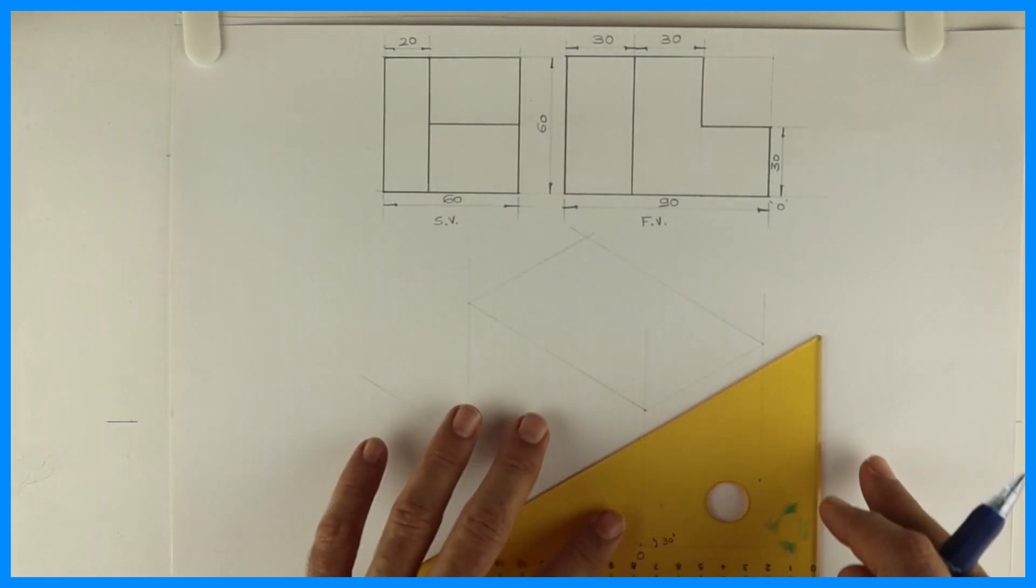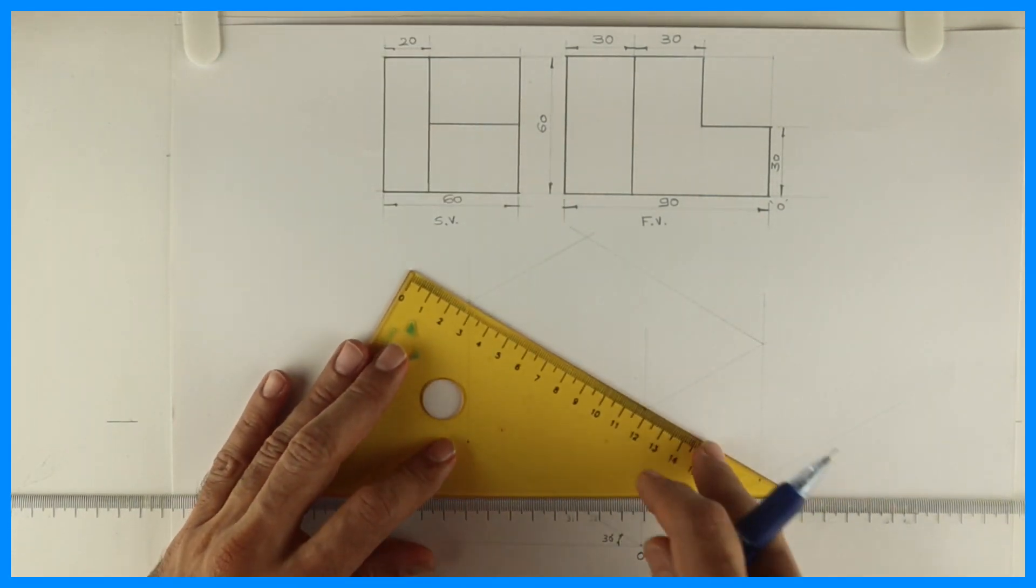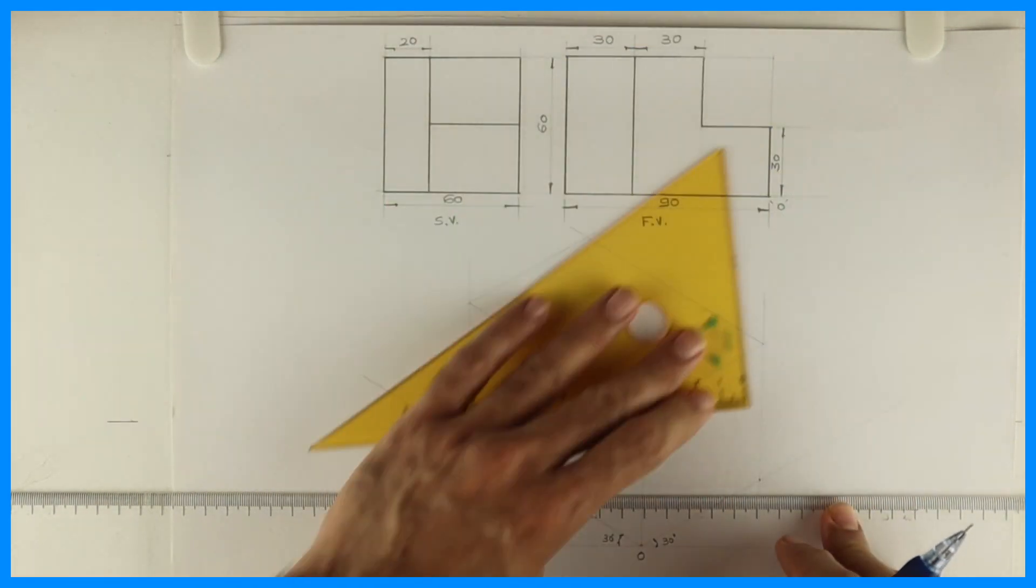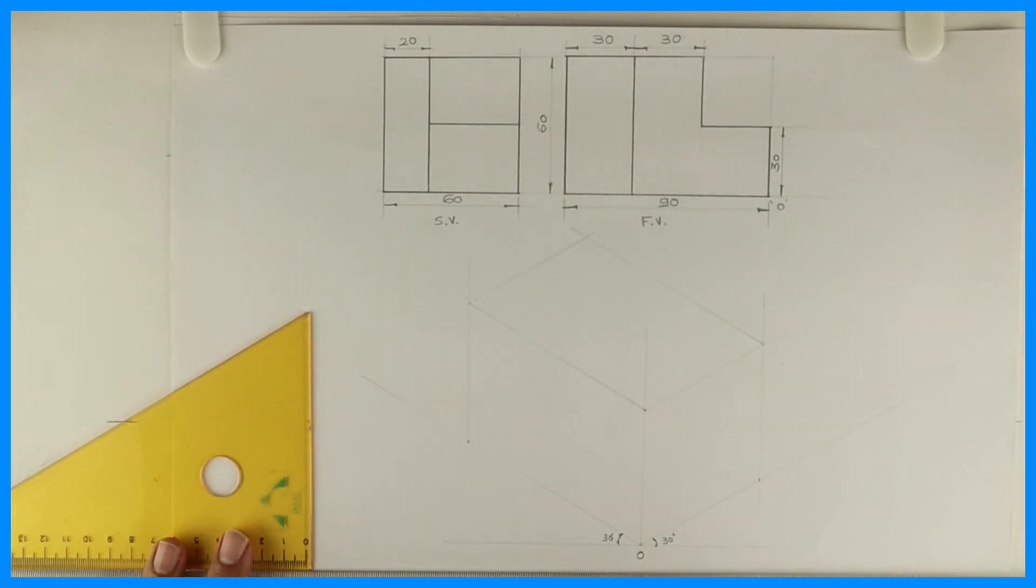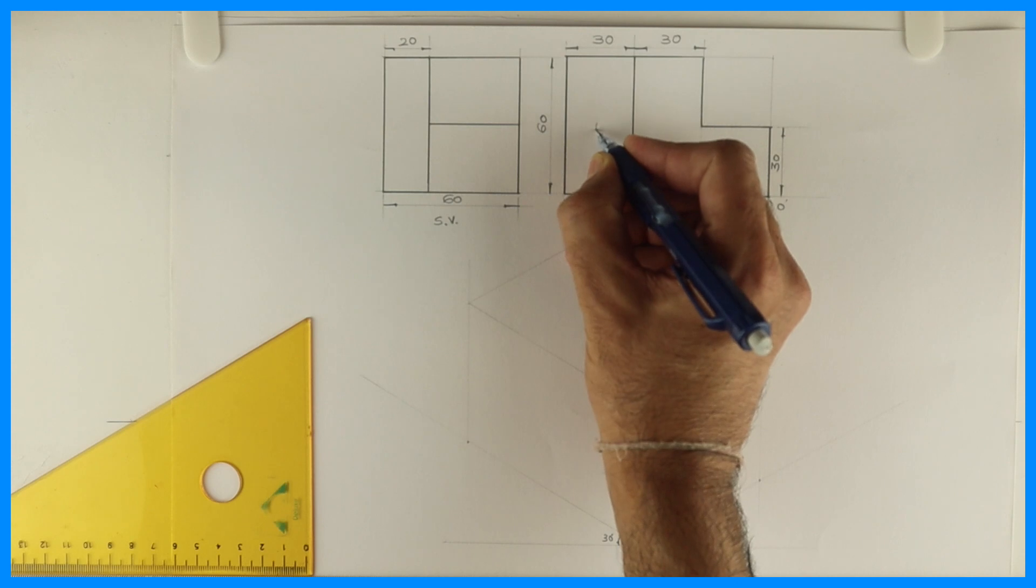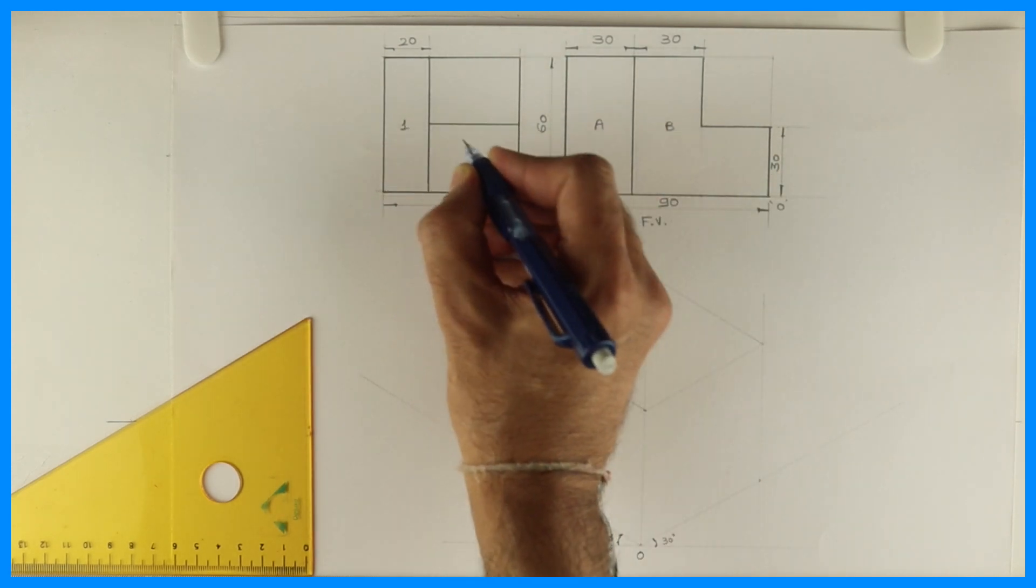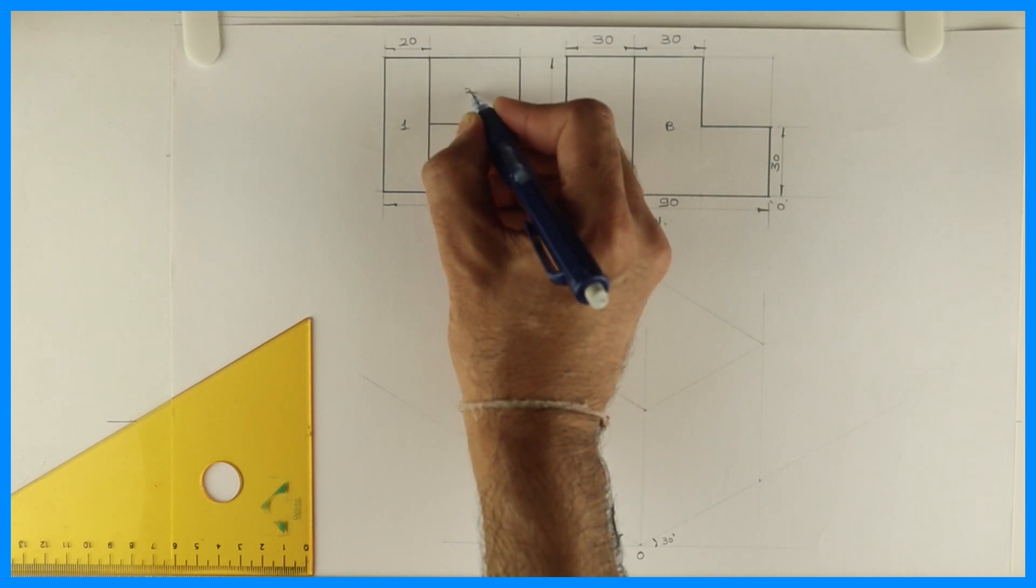So first you will draw a box like this. After this, now we will start with this. Now over here if you see there are two parts A and B. Here 1, 2, and 3.